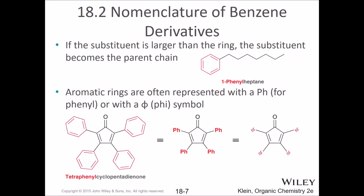If the substituent is larger than the ring, the substituent becomes the parent chain. In this case there are seven carbons, so that's going to be the parent chain and we say one, two, three — so it's 1-phenylheptane. Aromatic rings when you're naming things are often represented with 'Ph' or a phi symbol — these are all the same thing.